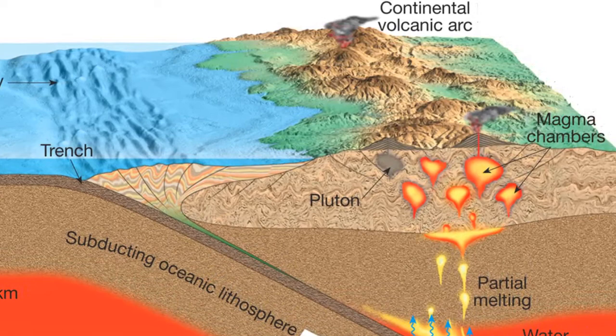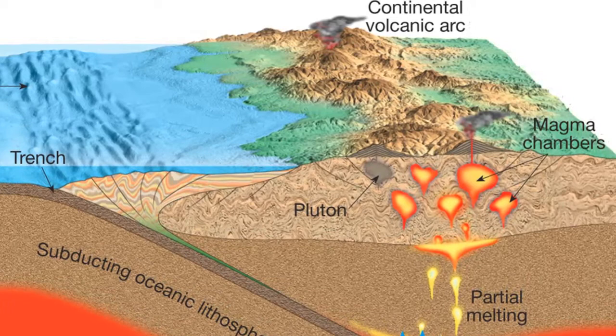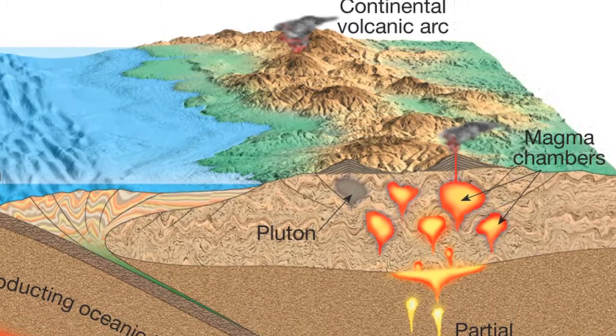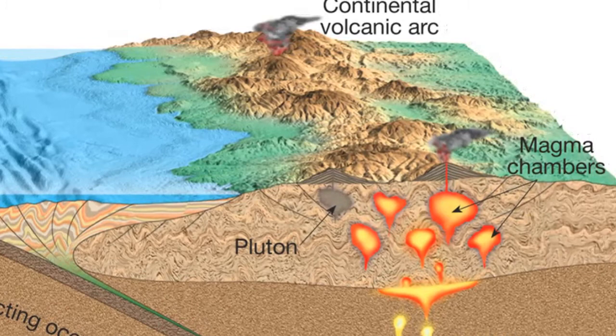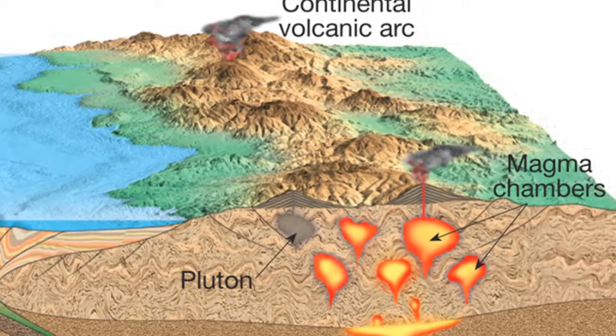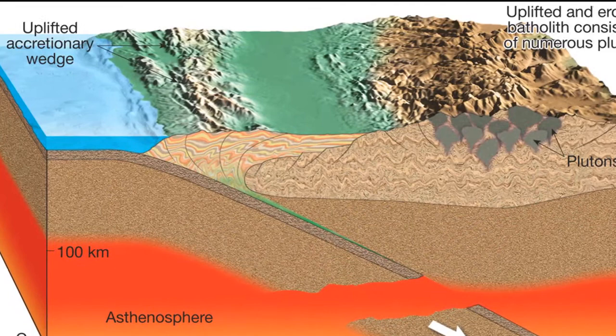Volcanism along continental arcs is dominated by the eruption of lava and pyroclastic materials of andesitic composition, whereas lesser amounts of basaltic and rhyolitic rocks may be generated. Because water, driven from the subducting plate, is necessary for melting, these mantle-derived magmas are enriched in water and other volatiles — the gaseous component of magmas. It is these gas-laden and acidic magmas that produce the explosive eruptions that characterize continental volcanic arcs and mature island arcs.